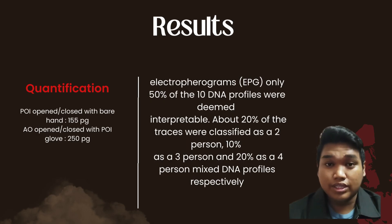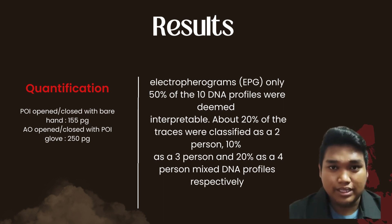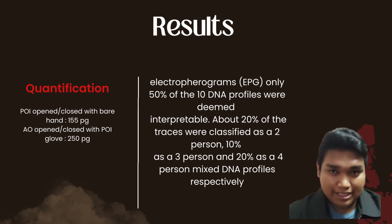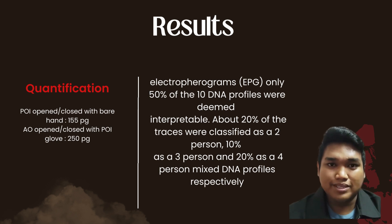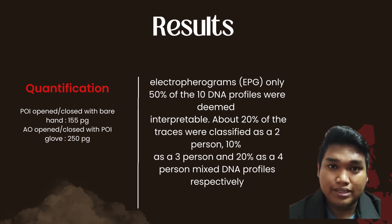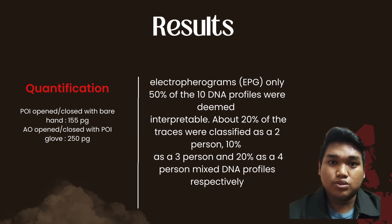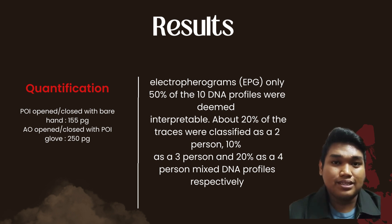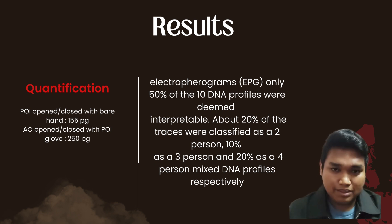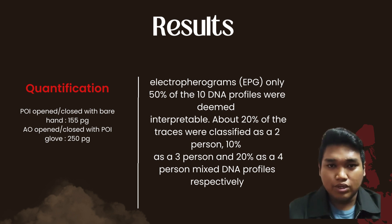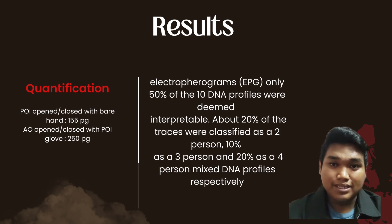Regarding the results, the quantification of DNA present on the handles showed that when the person of interest opened the door with a bare hand, the value was 155 pg, while when opened by the alternative offender it was 250 pg. Analysis of the electropherogram showed that only 15% of the DNA traces from 10 samples were deemed non-interpretable. Only 23% of DNA traces were classified as two-contributor profiles, and 10% as three-contributor mixed DNA profiles.